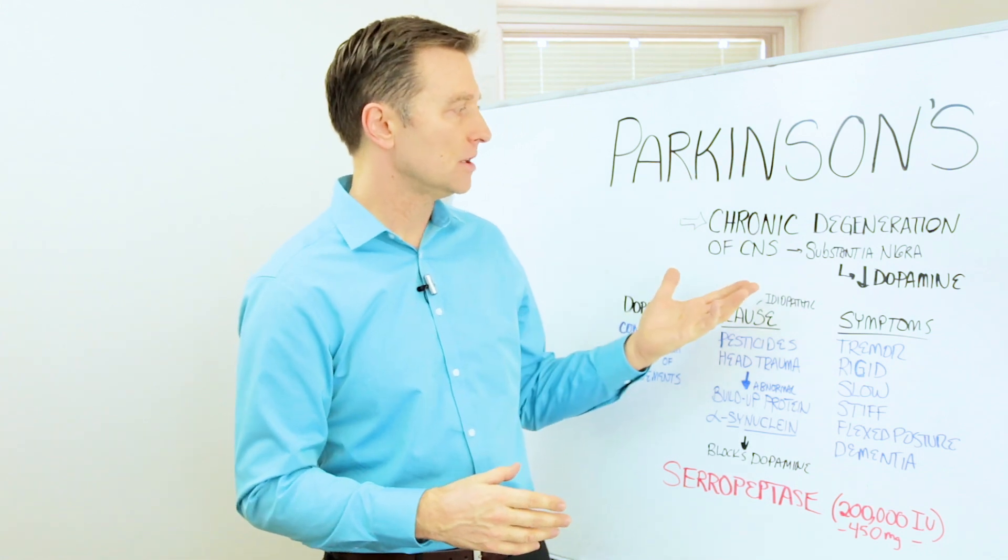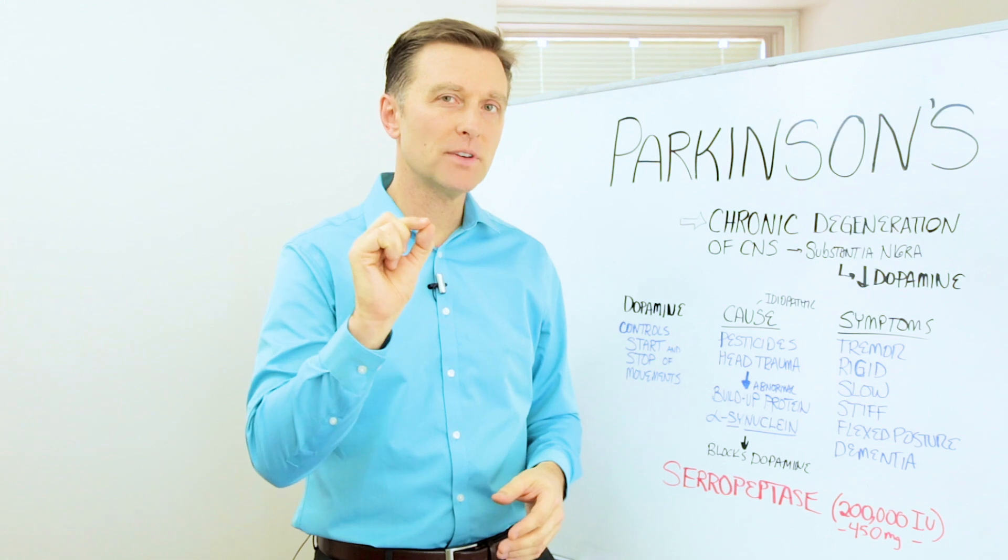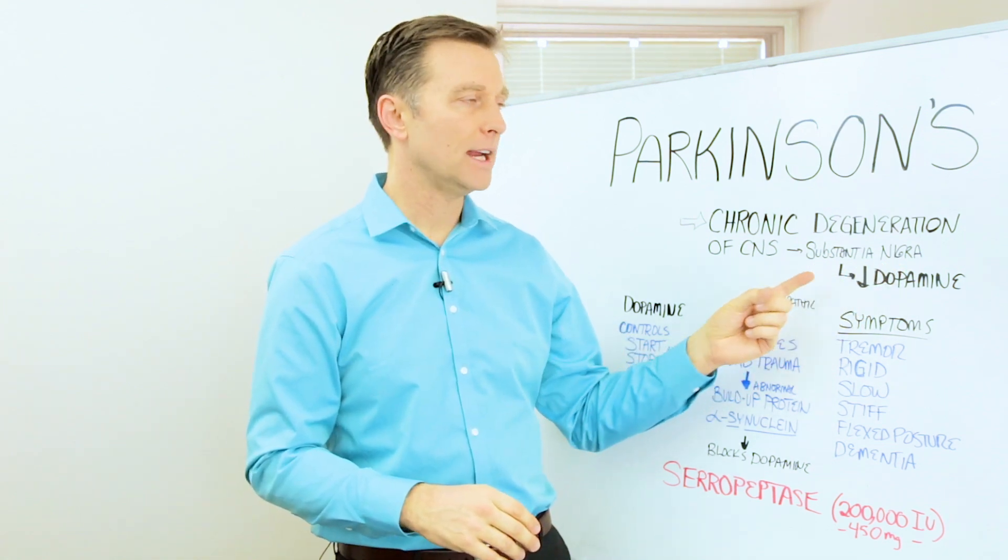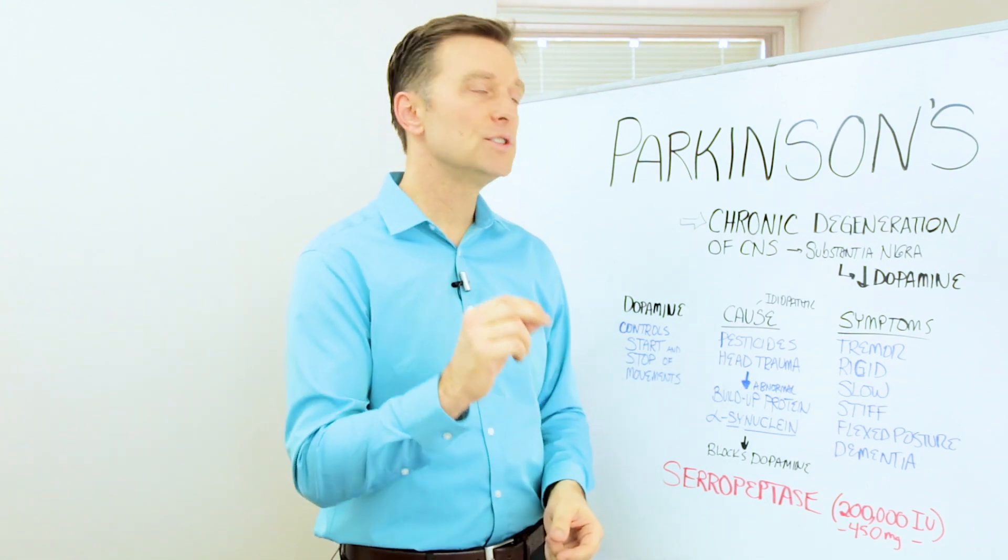It's a chronic degeneration of the central nervous system and involves specifically a part of the brain called the substantia nigra. That part of the brain controls a neurotransmitter called dopamine.